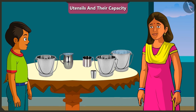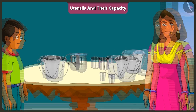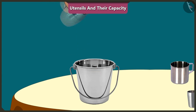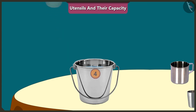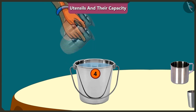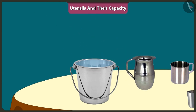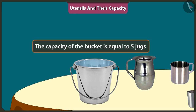Come on, let's try filling this bucket with this jug. One, two, three, four, five. The whole bucket got filled with just five jugs of water. This means the capacity of this bucket is equal to five jugs of water.